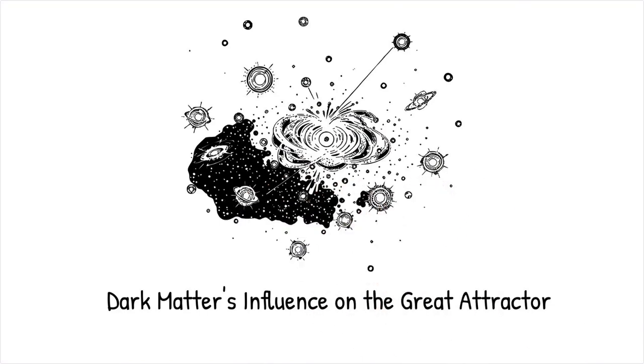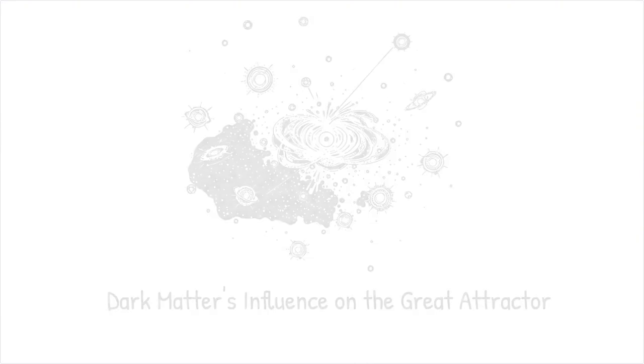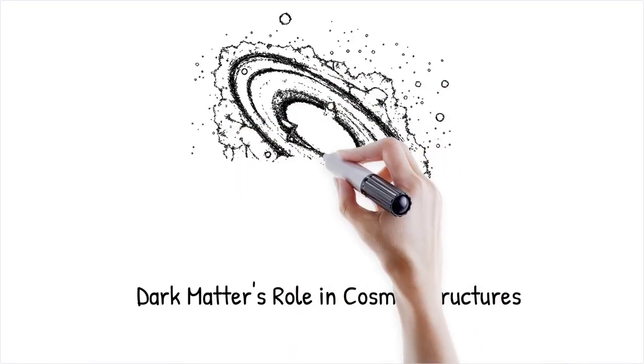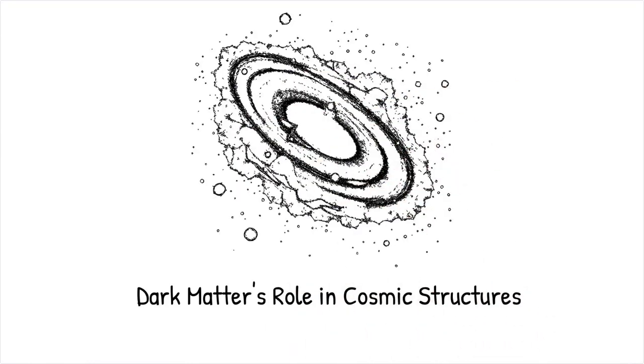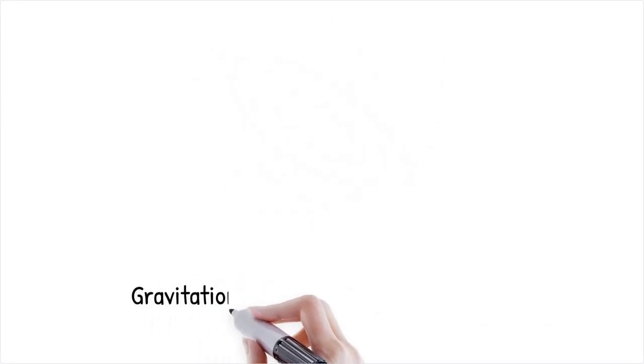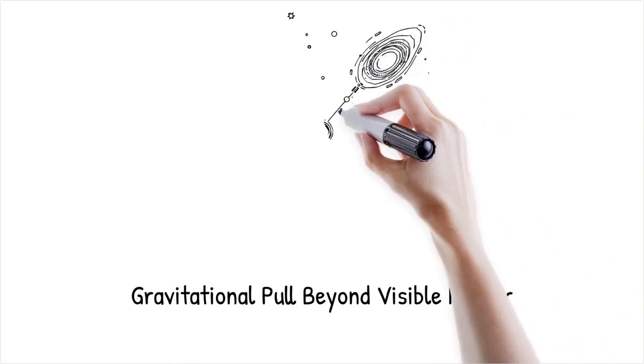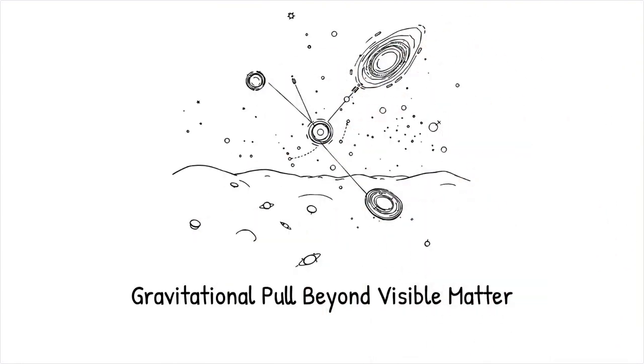One hypothesis to explain the Great Attractor is that it contains a large amount of dark matter, an invisible substance that exerts gravitational force. Dark matter could account for the mass required to generate the observed galactic motions. Critical analyses suggest that dark matter plays a crucial role in large-scale cosmic structures. Studies show that the gravitational pull in the region of the Great Attractor is far greater than what can be attributed to visible galaxies alone, implying a significant dark matter component.